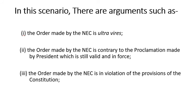In this scenario, there were many arguments. Five arguments are highlighted here. The first is that the order made by the National Election Commission is ultra vires. The second is that the order is contrary to the proclamation made by the President, which is still valid and in force. The third is that the order is in violation of provisions of the Constitution, because the Constitution clearly provides that the new Parliament should meet within three months.